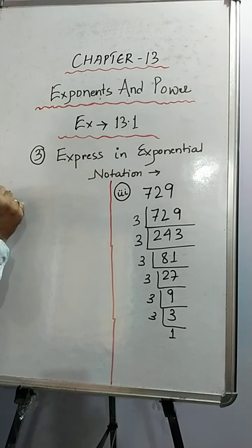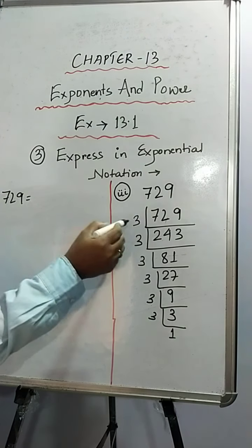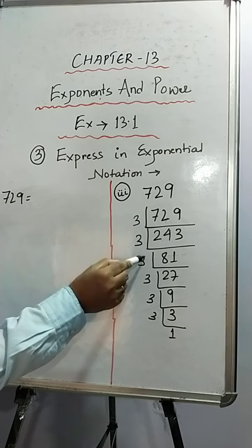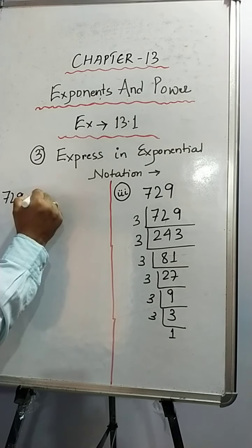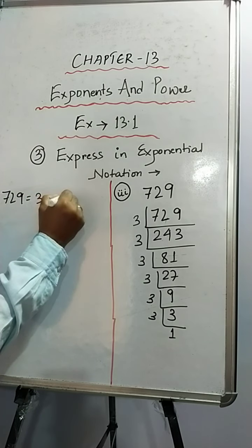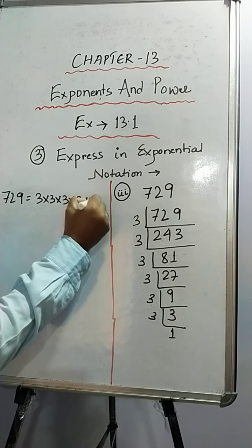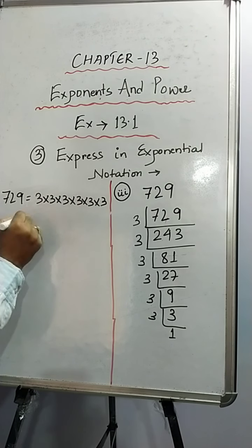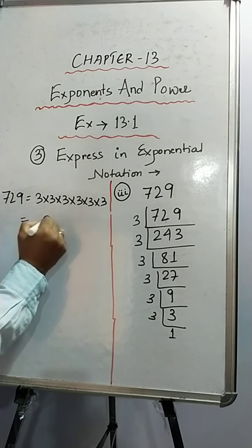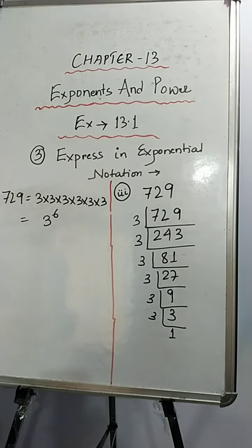So now we have to write all the factors. That is, how many 3's are there? 1, 2, 3, 4, 5 and 6. So that would be 3 times 3 times 3 times 3 times 3 times 3. So how many 3's are there? 6. So 3 to the power 6. So this is the exponential form of 729.